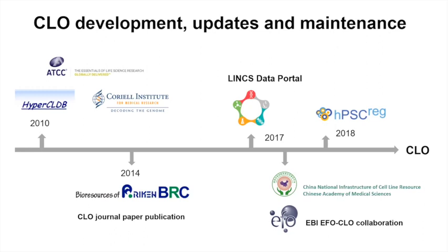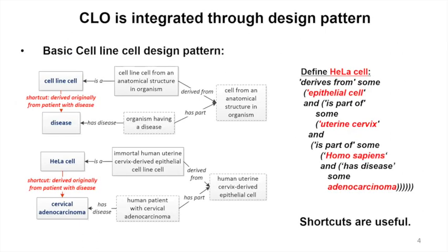Today I'll focus on how we advanced after the paper publication. I'll talk about the LINCS project, working with the Chinese centralized cell line group, working with EBI, and the stem cell group as an example. Basically, the Cell Line Ontology is purely based on design. With over 40,000 cell lines, we need high-level design in order to group everything together.